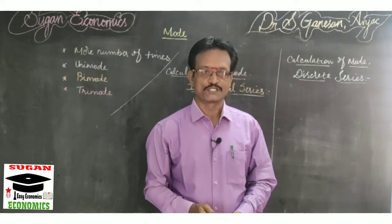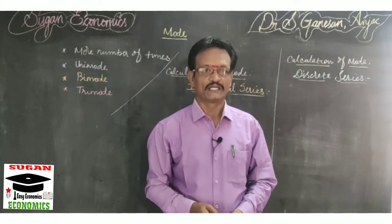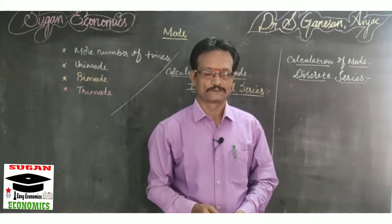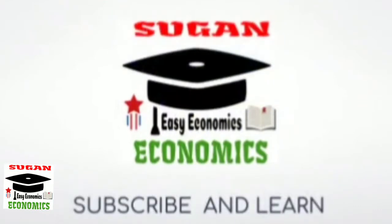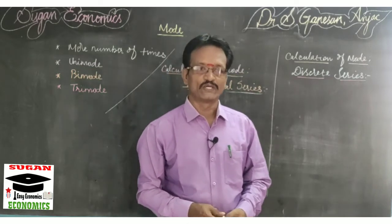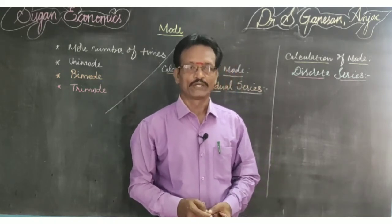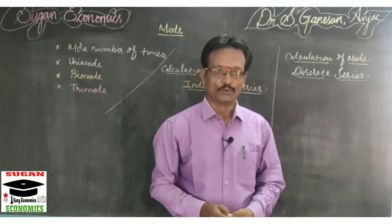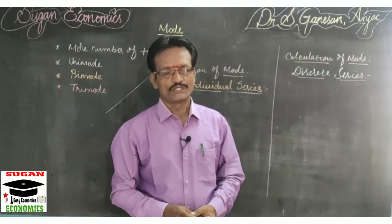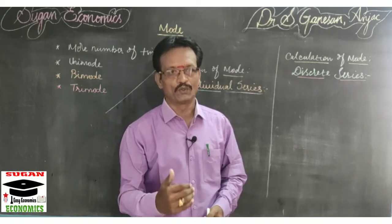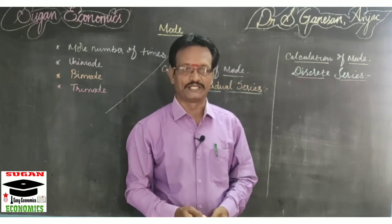Dear students, today we are going to discuss about the third measure of central tendency — mode — its meaning and calculation through Sugaan Economics. In the previous classes we discussed about arithmetic mean and median. Today we are going to discuss about the third measure of central tendency, mode. Mode is a positional average. We will discuss what mode means, its types, and then the calculation of mode for individual, discrete, and continuous series.